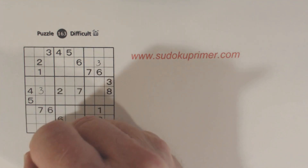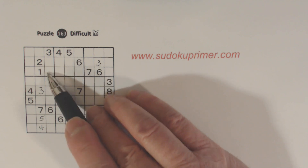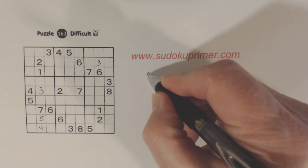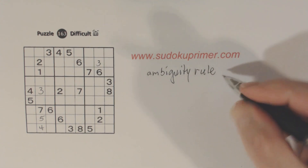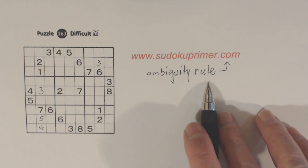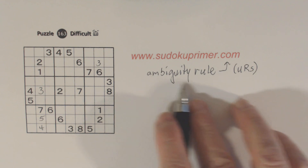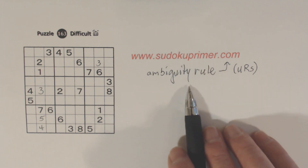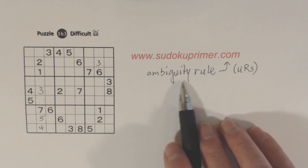Now I'm going to show you an example of the ambiguity rule. There's a write-up about the ambiguity rule at SudokuPrimer.com. If you're not familiar with that rule, it's also sometimes called unique rectangles or URs. I'd highly recommend you go to SudokuPrimer.com and learn more about it because it's a very powerful concept and technique that can help you find numbers in very difficult puzzles, much more difficult than this one.